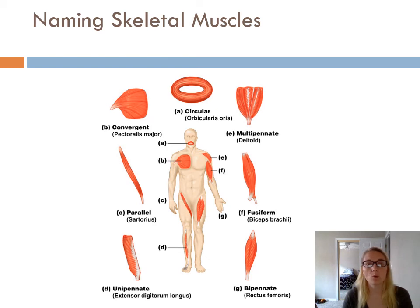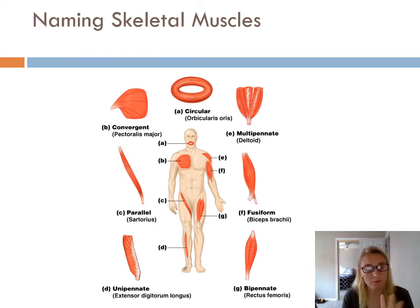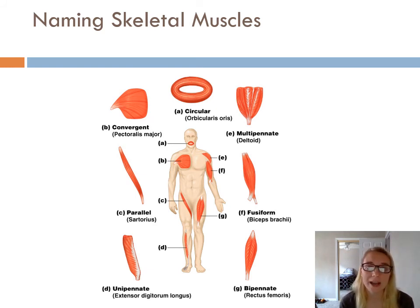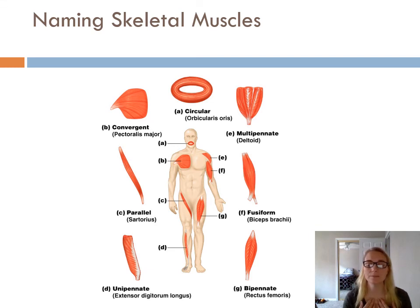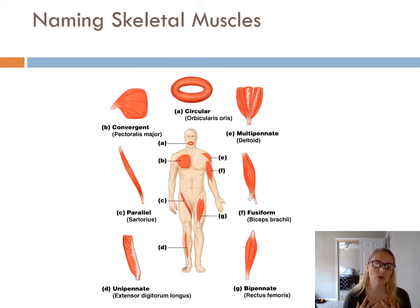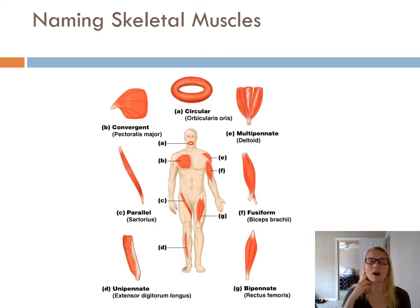Some muscles are named by how many origins they have: bicep has two, tricep has three, quadricep has four — it's actually made up of four muscles, your rectus femoris and three vastus muscles. Sometimes muscles are named for where their attachments are. The sternocleidomastoid connects to the sternum, the clavicle, and then comes up to the mastoid process on your temporal bone — so the name tells you exactly where that muscle is and its origins and insertion. The action would be lateral flexion.